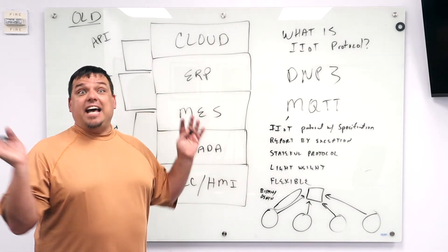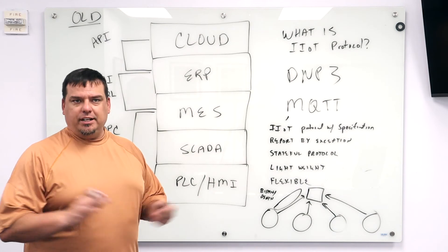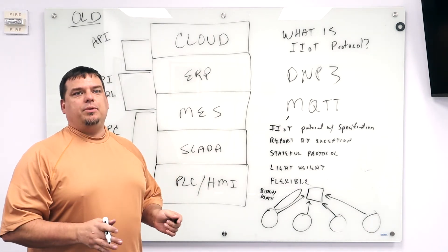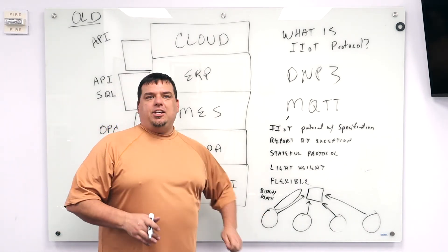It's lightweight. Basically the header's really, really small. It's two byte overhead. Very, very, very small overhead with MQTT. So what are the implications there?